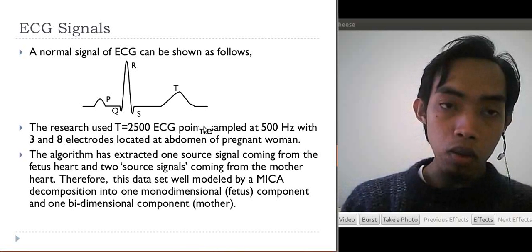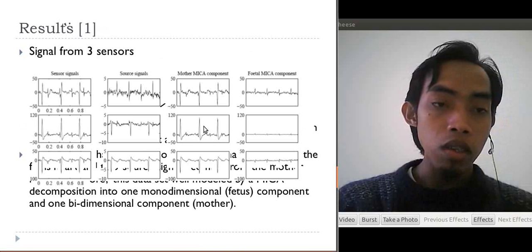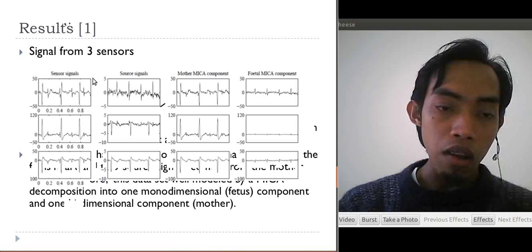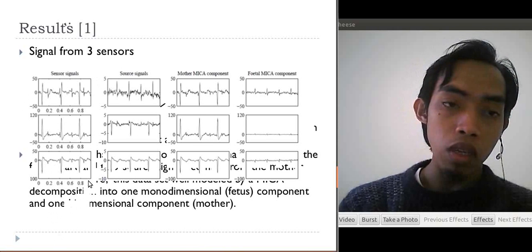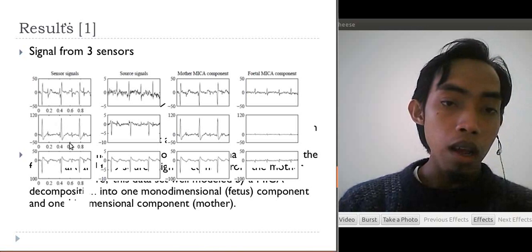After applying MICA to the ECG signal, we got the result like this. The first result, we use 3 sensors. The first one, the left side, is a signal from the sensors: first, second, third, because we use 3 signals.